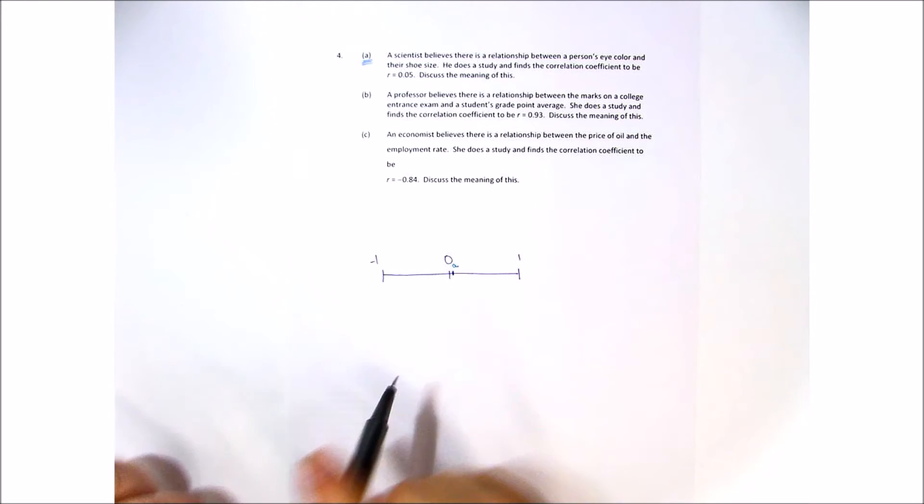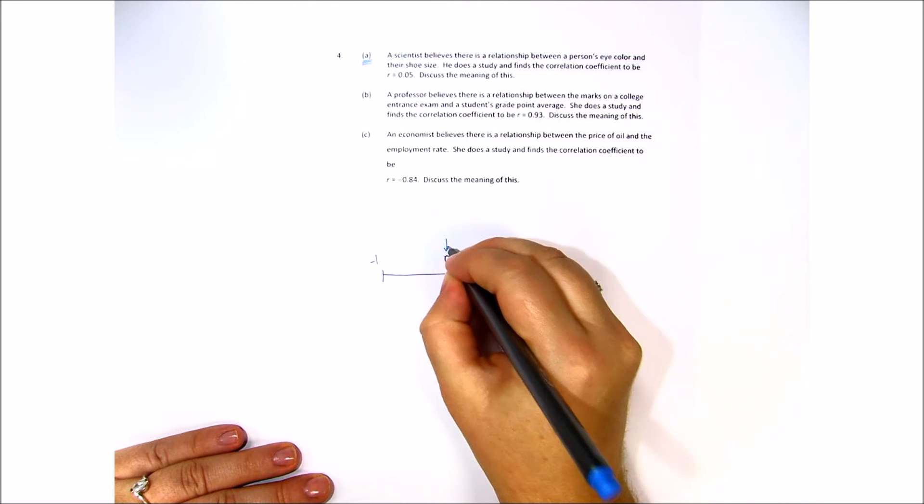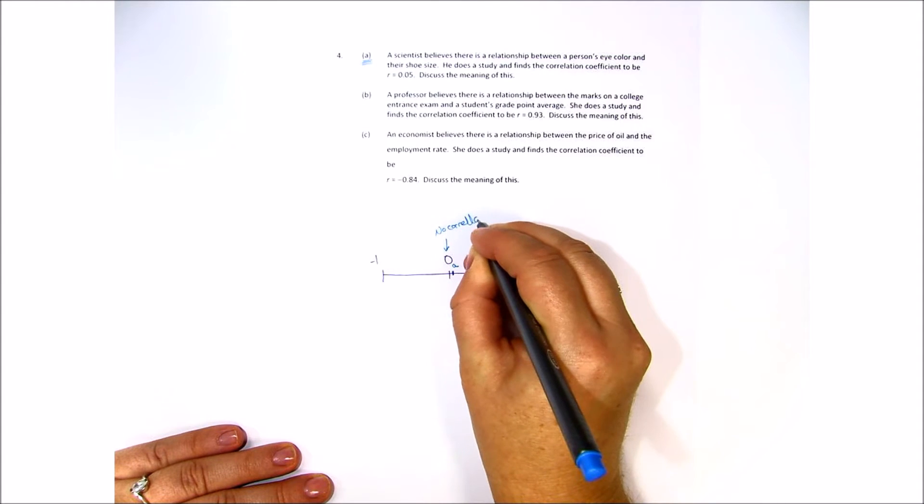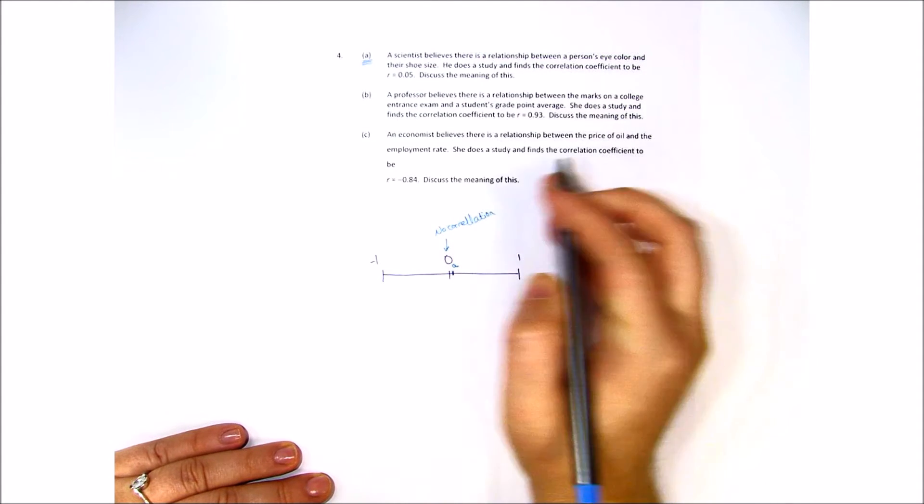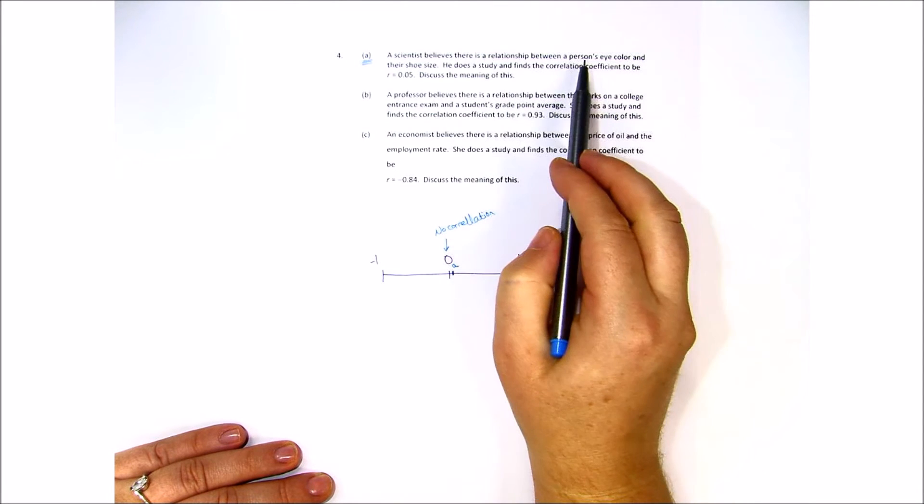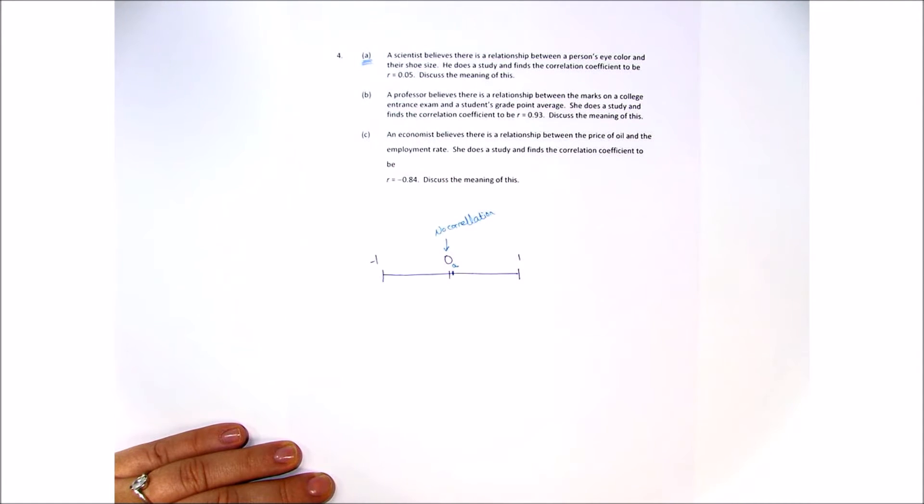If you look at the scale, this is very close to absolutely no correlation. In other words, we do not expect there to be a correlation between a person's eye color and their shoe size.